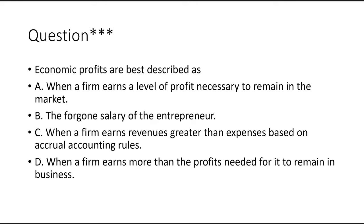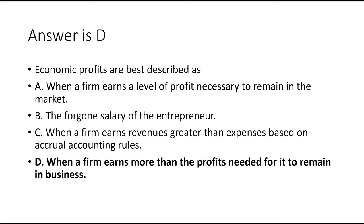Next question: Economic profits are best described as — A) when a firm earns a level of profit necessary to remain in the market? No, that's normal profit. B) The foregone salary of the entrepreneur? No, that's the implicit cost subtracted to arrive at normal profit. C) Revenues greater than expenses based on accrual accounting? That's net income. D) When a firm earns more than the profits needed to remain in business. The answer is D.